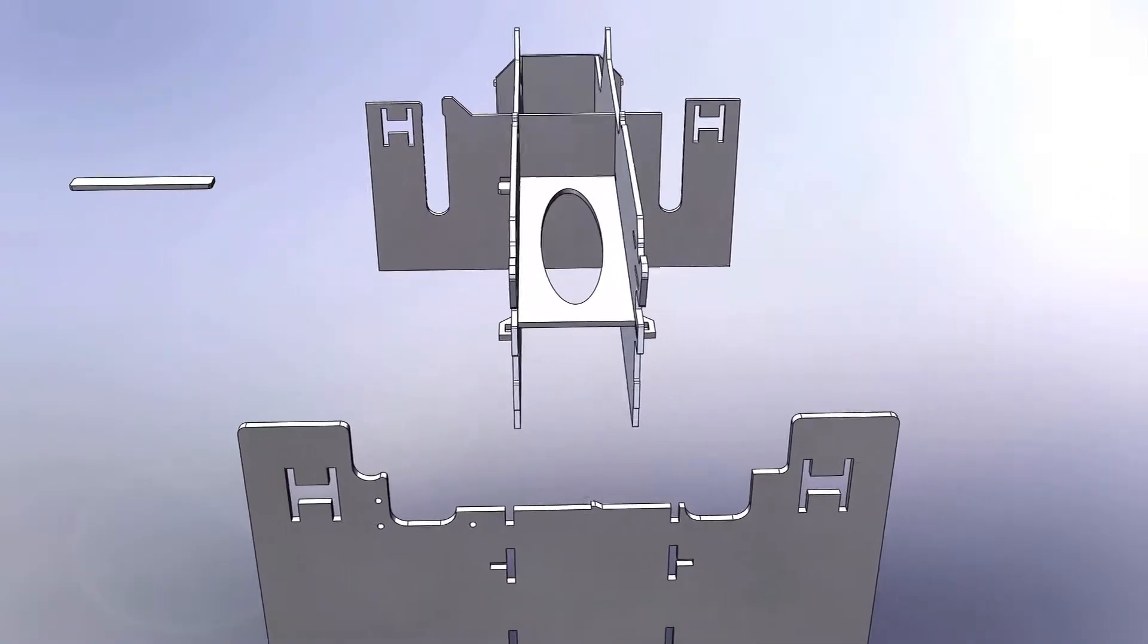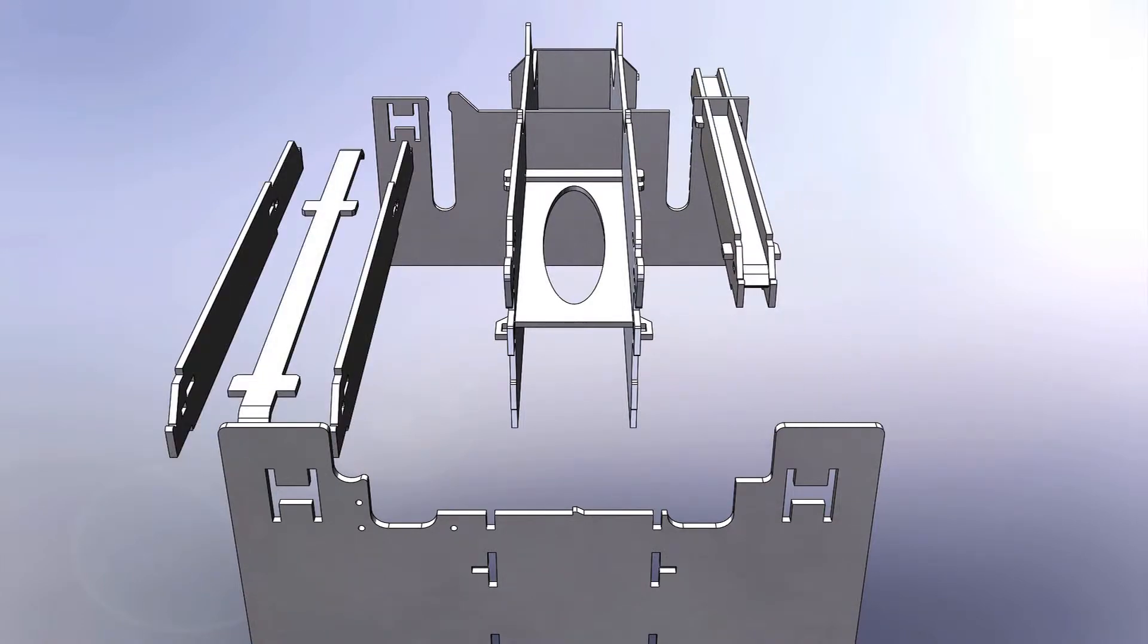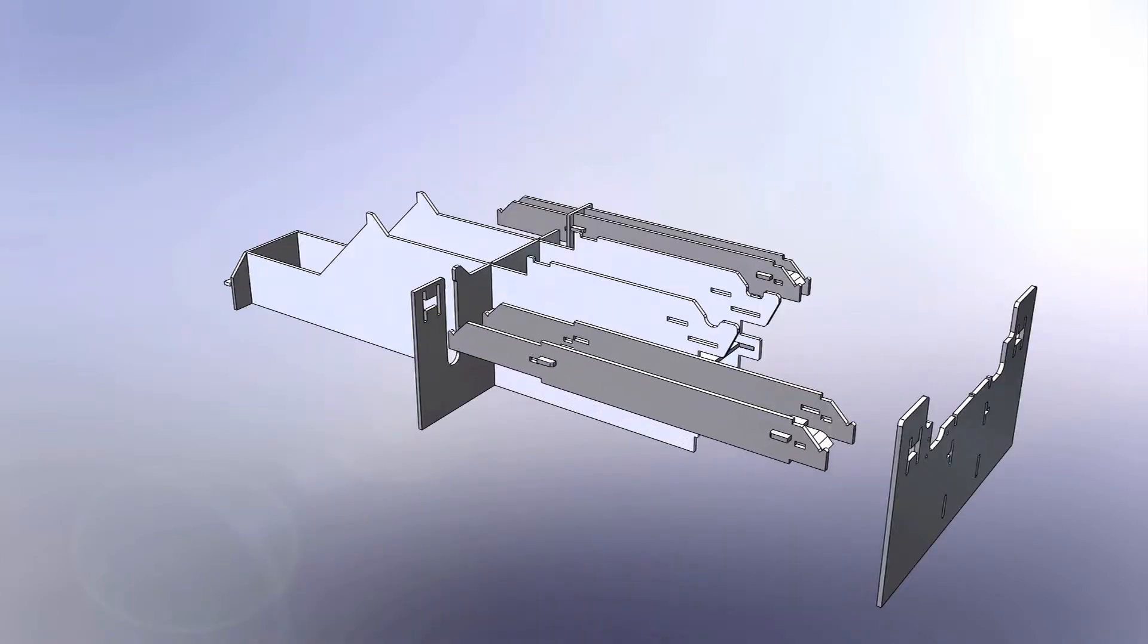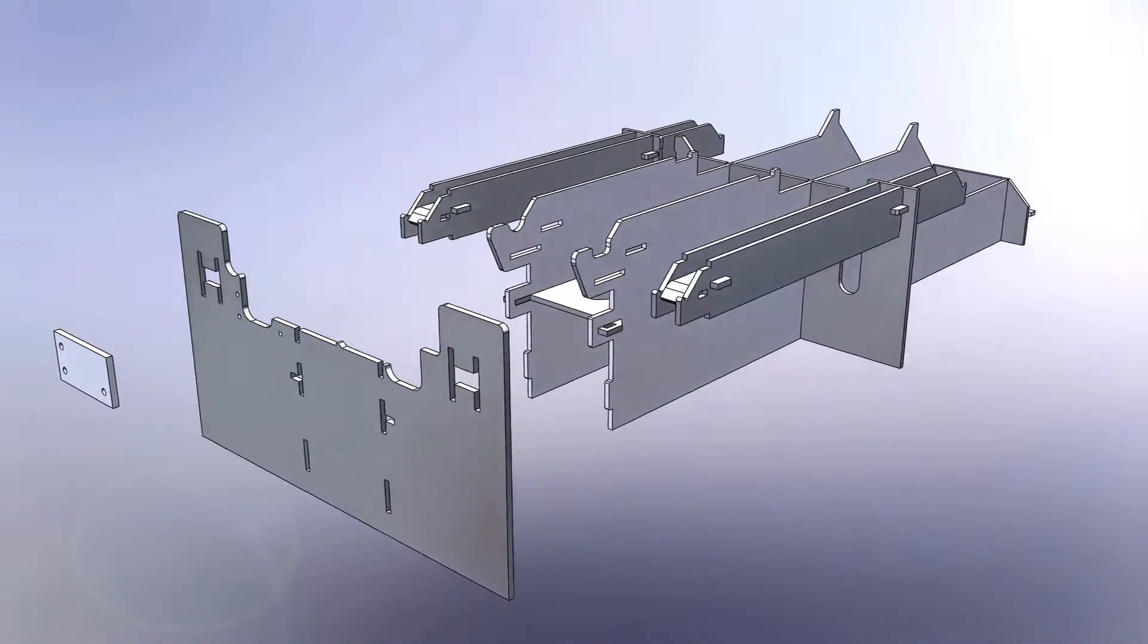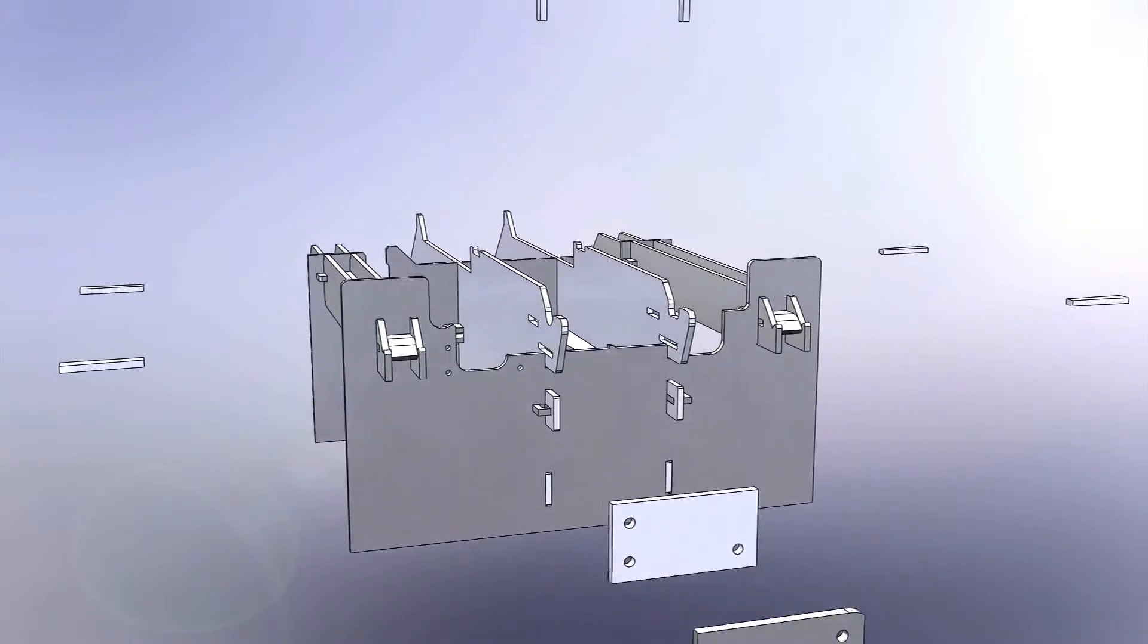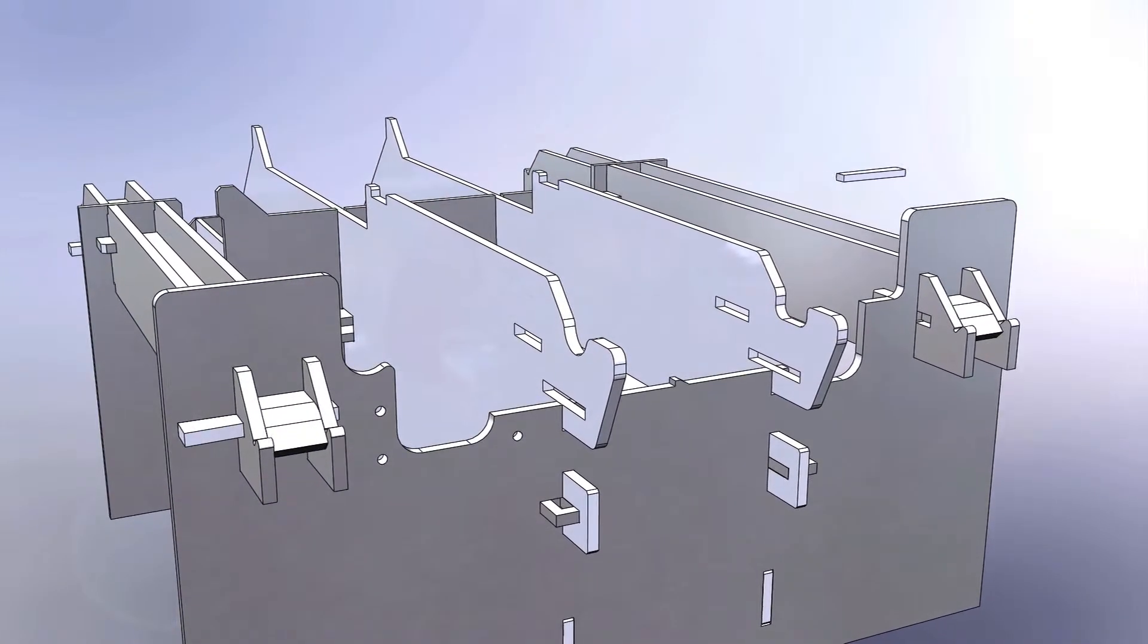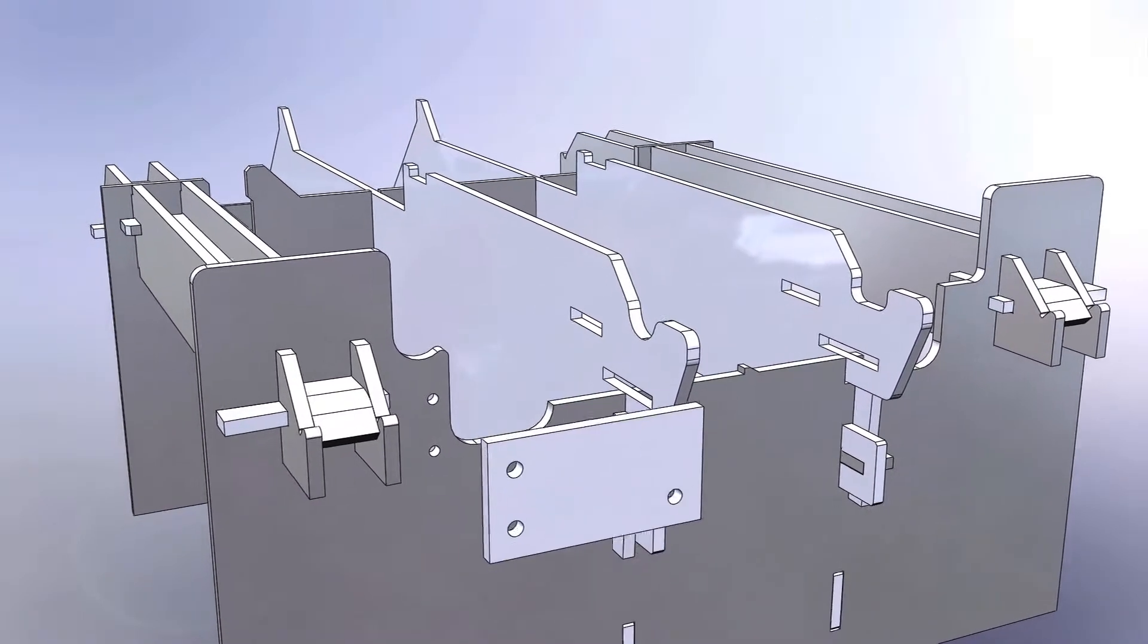I elected to use wedges to mechanically fasten the jig as opposed to bolts for several reasons. They are quicker to set. They do not require any tapping operations. Also because the plates intersect each other in a perpendicular manner, bolts would have required brackets resulting in more parts and labor. Remember, a bolt is effectively a wedge wrapped around a cylinder.